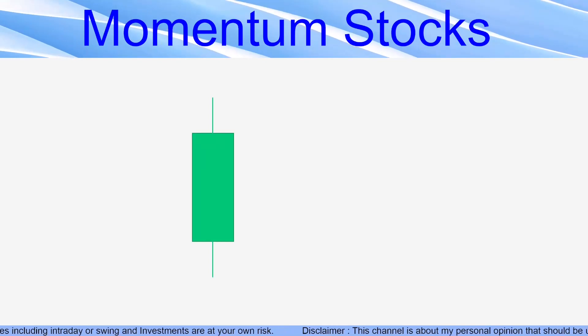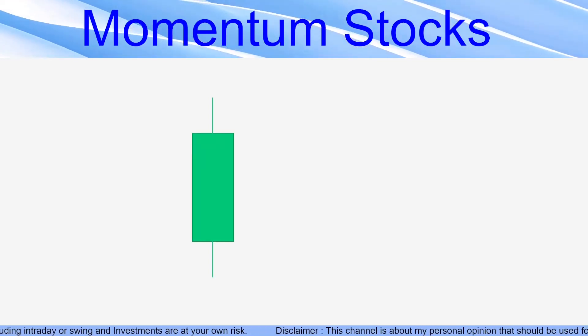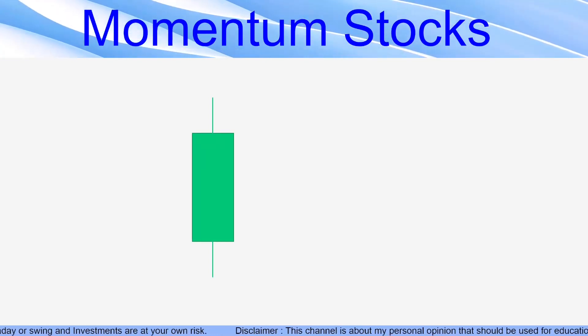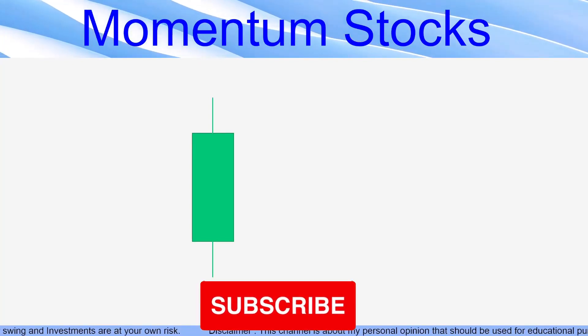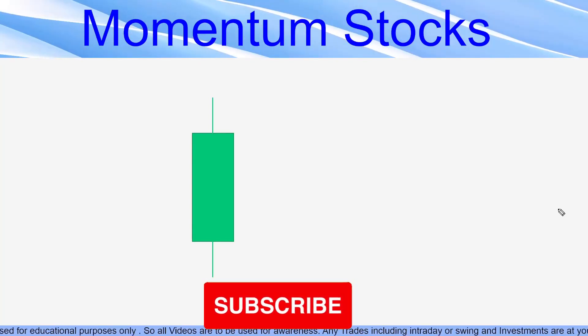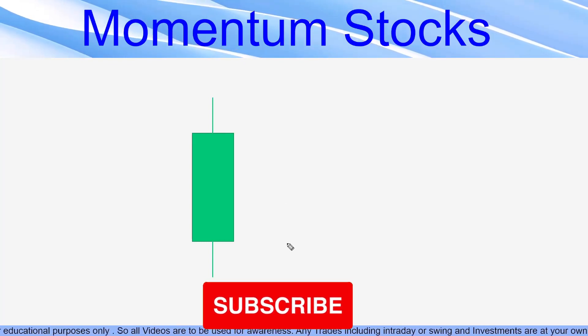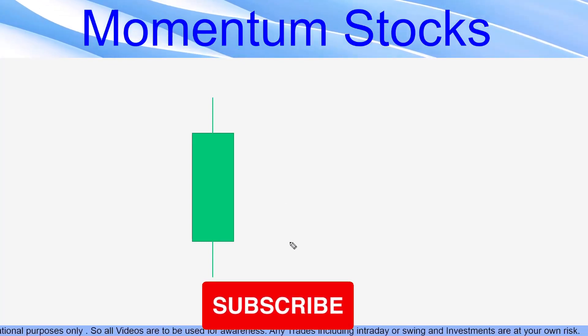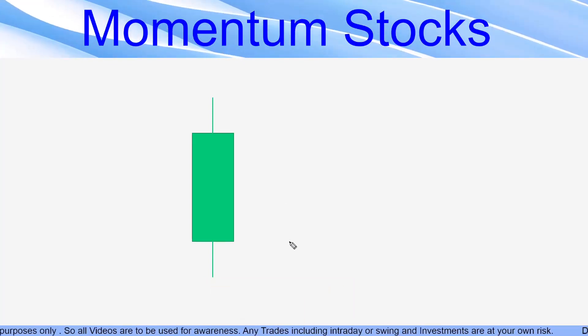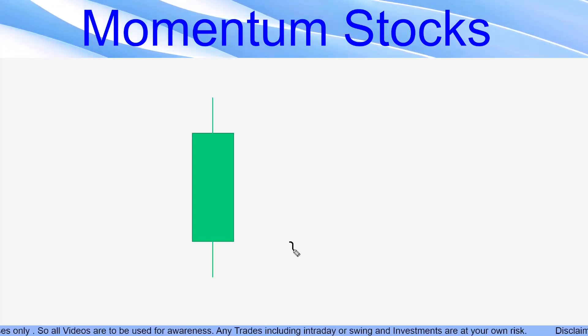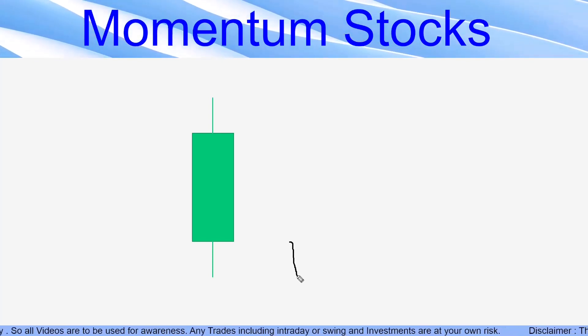So let's take an example of this particular candle. This candle, let us say is for one hour. So for example, now the time is 10 o'clock. And you see the stock started here and it started going down. At 10:10 it was here. Then again, at 10:15 it was here.